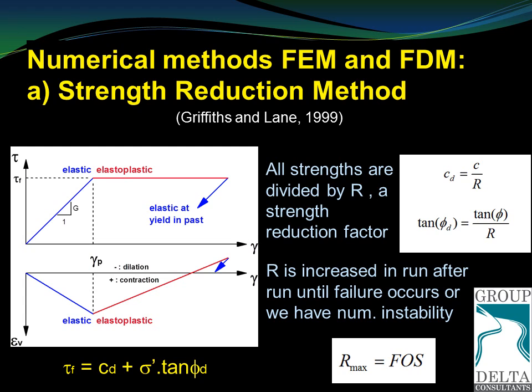In this method, the soil is assumed to behave elastically until the Mohr-Coulomb failure criteria is reached. The Mohr-Coulomb failure criteria is defined by the mobilized cohesion, C sub D, and the mobilized friction angle, phi sub D.